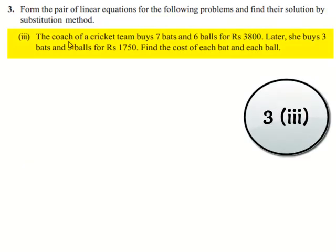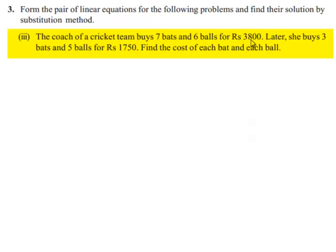Coming to the third problem: the coach of a cricket team buys 7 bats and 6 balls for 3800 rupees. Later, she buys 3 bats and 5 balls for 1750 rupees. Find the cost of each bat and each ball.